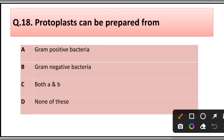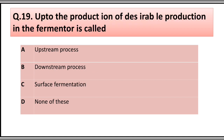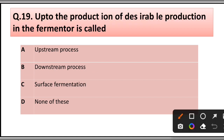Question number seventeen: Protoplasts can be prepared from: A) gram-positive bacteria, B) gram-negative bacteria, C) both A and B, D) none of these. The correct answer is option B, protoplasts are prepared from gram-negative bacteria.